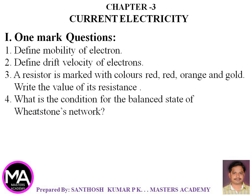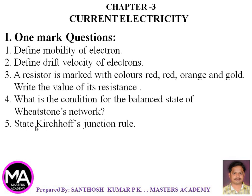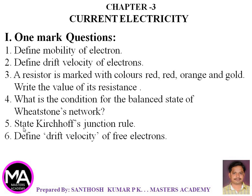Fourth question: What is the condition for the balanced state of Wheatstone's network? Fifth one: State Kirchhoff's Junction Rule. Sixth question: Define Drift Velocity of Free Electrons.